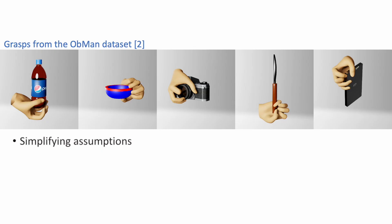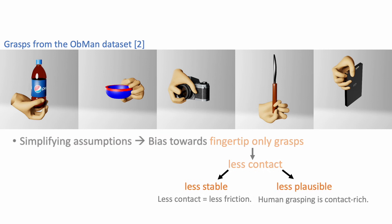In particular, simplifying assumptions about contact locations lead to a bias towards fingertip-only grasps. These provide only limited hand-object contact, which makes grasps less stable, since smaller contact surfaces can provide less frictional and normal force, and less plausible, because they do not match the distribution of real human grasps, which tend to create more contact area than can be achieved with fingertips alone.